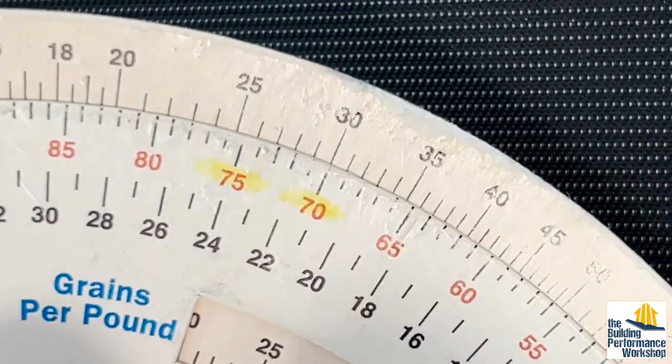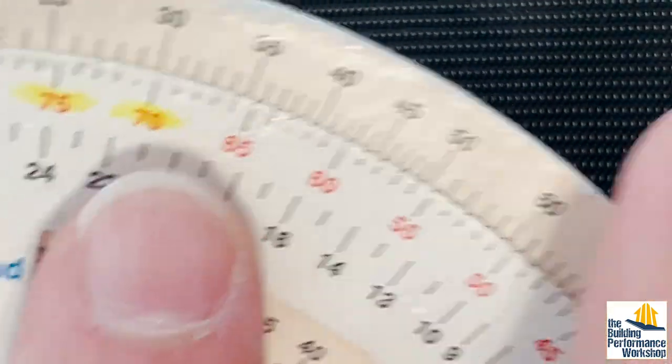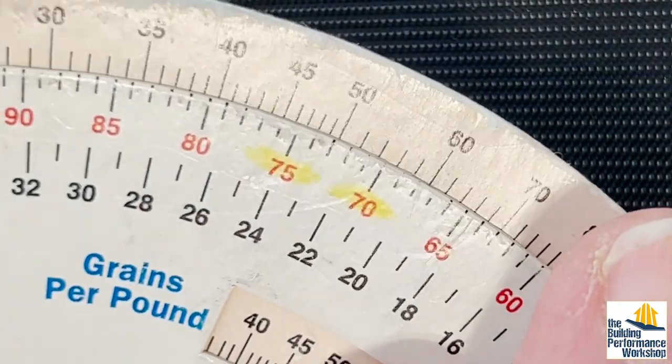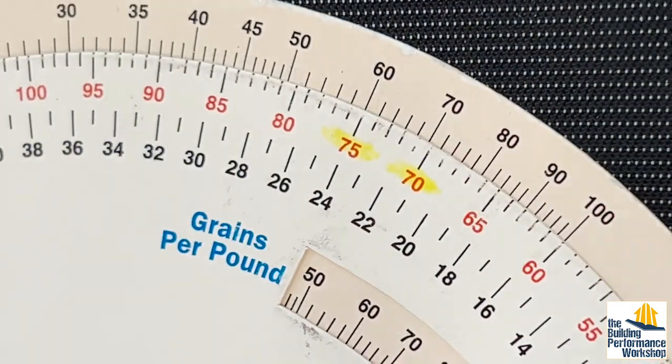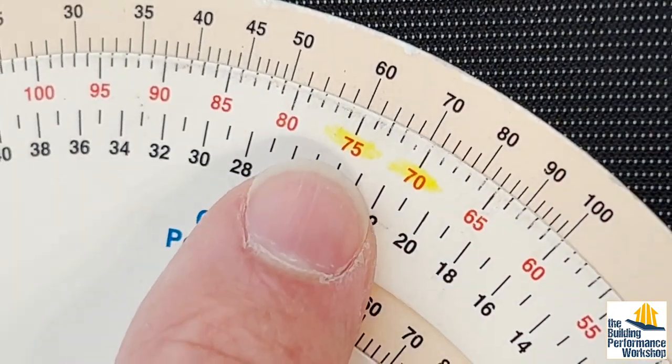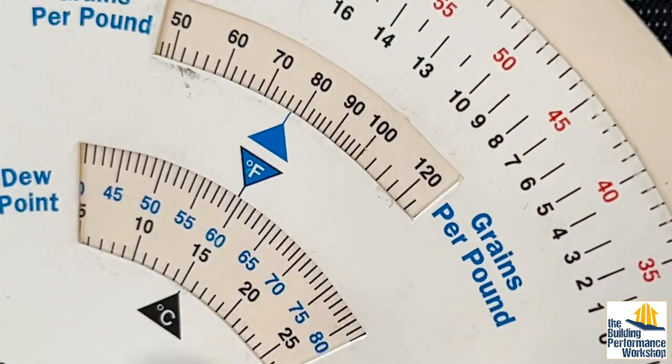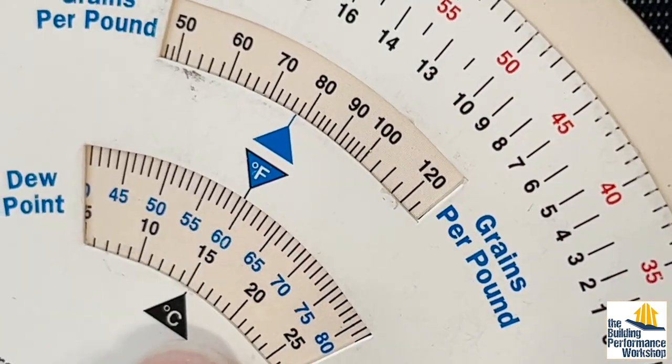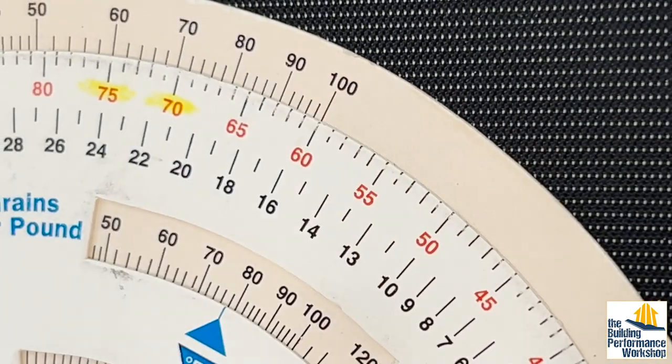When we're talking about summertime, we're talking about 75 degrees. Let's take this 75 degrees and make it 60% relative humidity. The dew point of this kind of air is about 60 degrees.